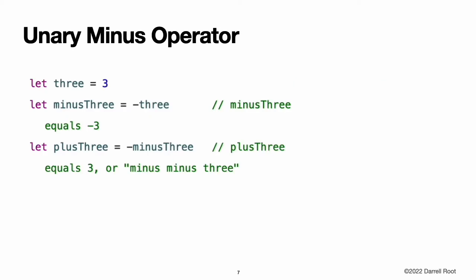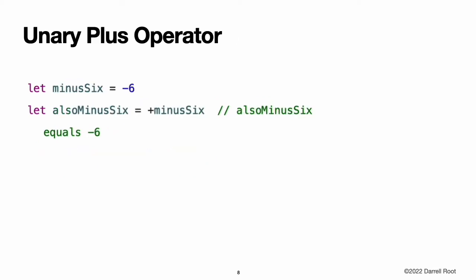Unary minus operator. The sign of a numeric value can be toggled using a prefixed minus sign, known as the unary minus operator. The unary minus operator is prepended directly before the value it operates on without any white space. Unary plus operator. The unary plus operator simply returns the value it operates on without any change. Although the unary plus operator does not actually do anything, you can use it to provide symmetry in your code for positive numbers when also using the unary minus operator for negative numbers.